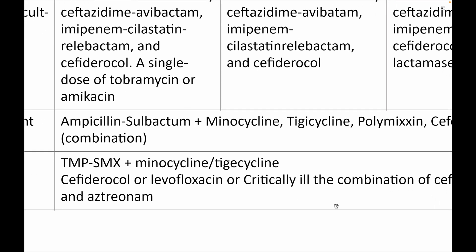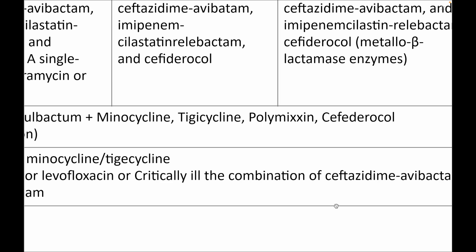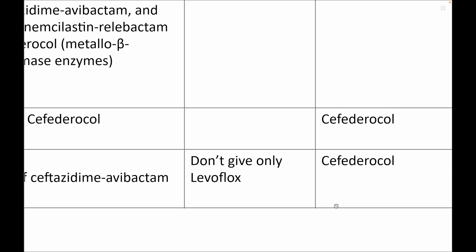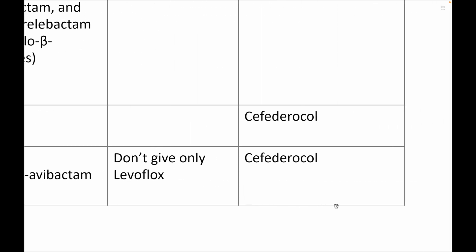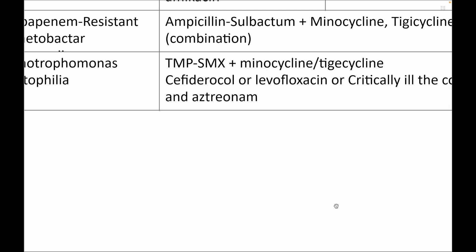Regarding carbapenem-resistant Acinetobacter baumannii (CRAB), you go for combination therapy. One of the drugs is preferably ampicillin-sulbactam. To ampicillin-sulbactam, you can add minocycline, tigecycline, polymyxin, or cefiderocol. Cefiderocol remains a reserve drug in all these infections.